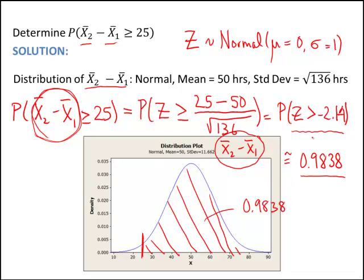We did a lot in this problem. We used our standard normal table, we needed independence to combine the variances for the linear combination of random variables, and we used the central limit theorem to say that the X-bars had a normal distribution. This was a great practice problem because it had so many elements — things we're now discussing or have discussed in previous sections. The central limit theorem is really the backbone of statistical theory, and here we've seen how it combines with other properties from throughout the course.